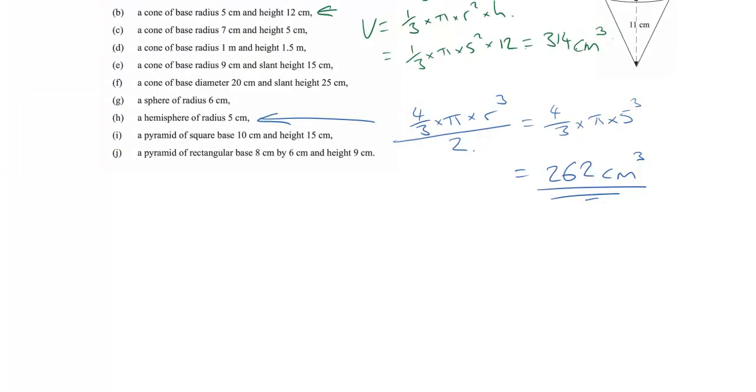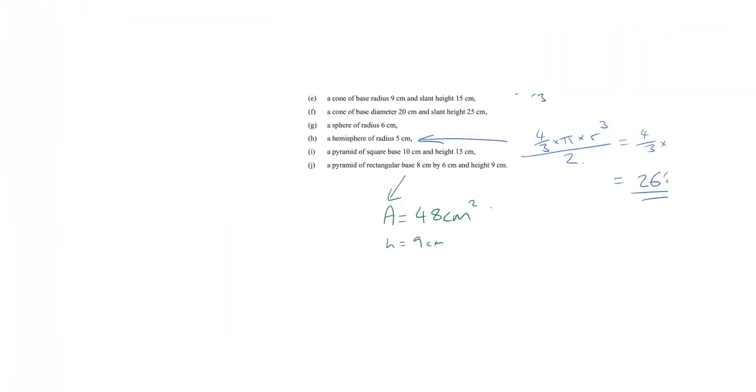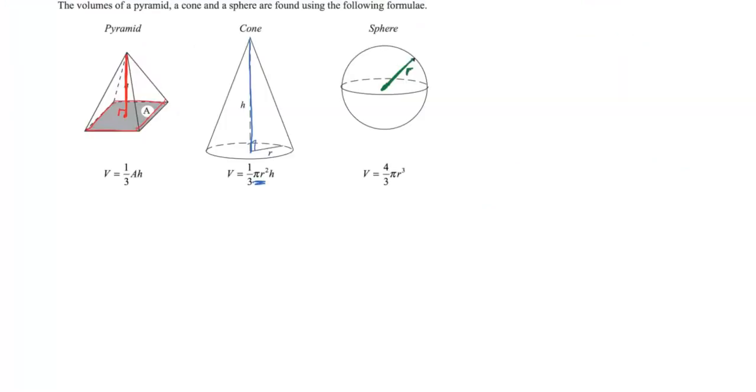Now let's carry on. Let's do one more. Let's do J. Let's do a pyramid. So a pyramid - we've got a rectangular base which is 8 by 6. So that means the area of that base is 8 times 6, which is 48 centimeters squared. Now we know the height is 9 centimeters.